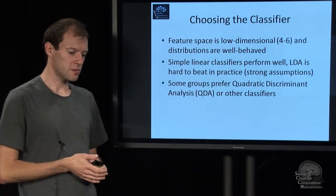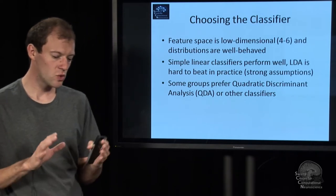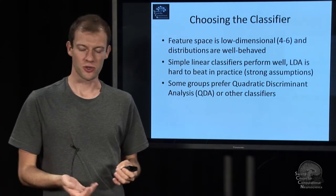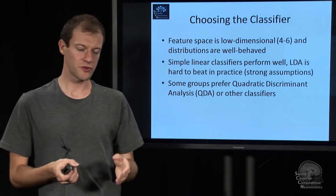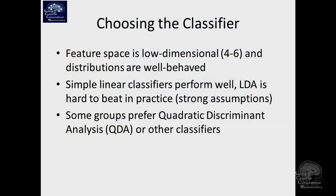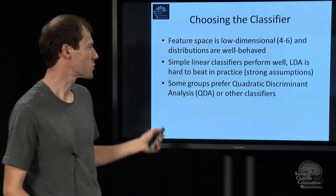What's pretty nice about common spatial patterns is it gives you useful features. It gives you the most informative spatial filter for one class with maximum variance, and another one for the other class. With just two features — log variance — you are well underway, and you can include a few more eigenvectors to work with. You have a low-dimensional space, and that means just about every classifier ever invented works well with this data.